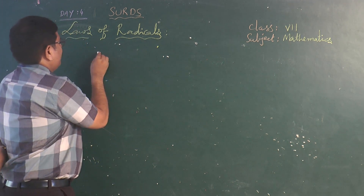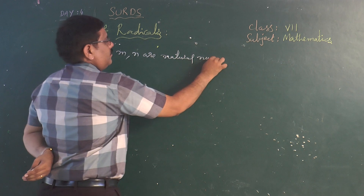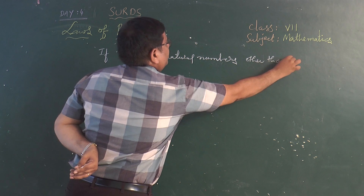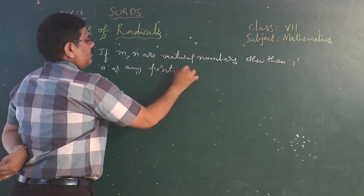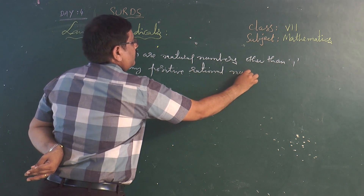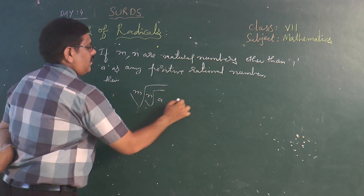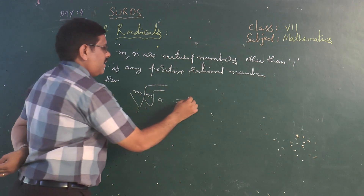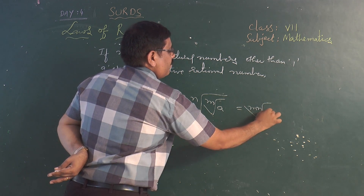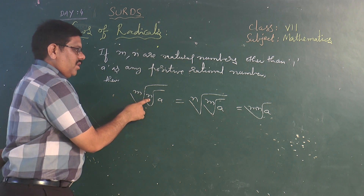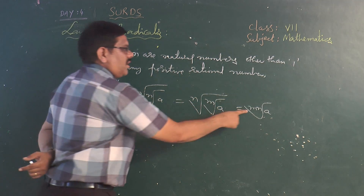The next rule is: if m and n are natural numbers other than 1, and a is any positive rational number, then the mth root of the nth root of a equals the nth root of the mth root of a, and both are equal to the mn-th root of a. Even though you interchange them, the result remains the same. This is a very useful and important property.